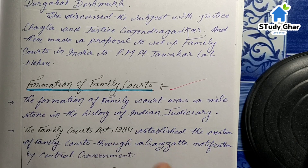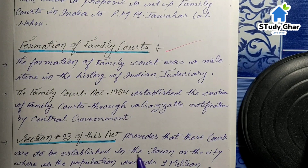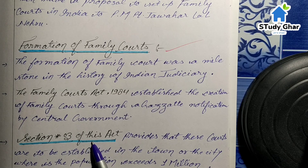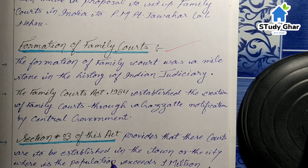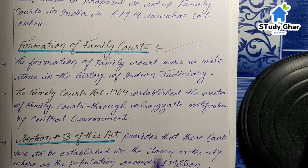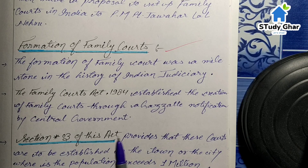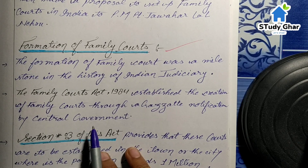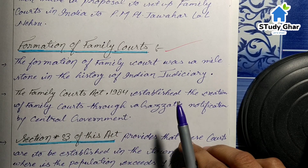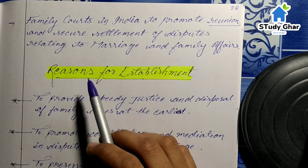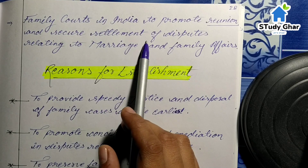Family courts were established under Section 3 of the Family Court Act 1984. Section 3 provides that these courts are to be established in a town or city where the population exceeds one million — that is, wherever the population is more than 1 million, family courts can be established there.